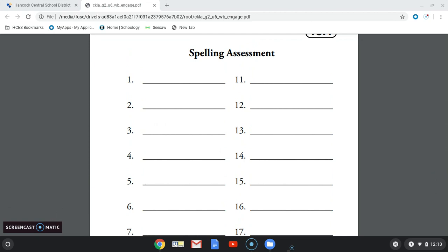Number 15, judge. There will be a judge at the talent show. Judge. Number 16, action. A verb is an action word. Action.